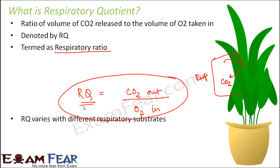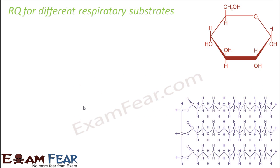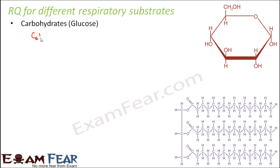The value of the respiratory quotient varies with different respiratory substrates, because every substrate has its own capacity to give out carbon dioxide when given a particular amount of oxygen. Let us look at some different substrates — starting with carbohydrates, specifically glucose.